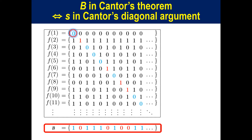The first digit in F₁ is 0, thus the first digit in B is 1. The second digit in F₂ is 1, thus the second digit in B is 0. The third digit in F₃ is 0, thus the third digit in B is 1, and so on. Therefore, the set B — the Cantor diagonal set in the proof of Cantor's Theorem — is S in the Cantor Diagonal Argument.